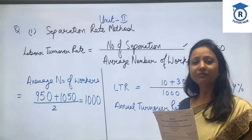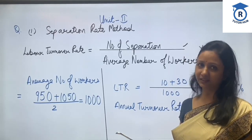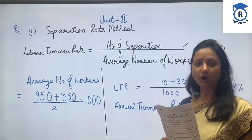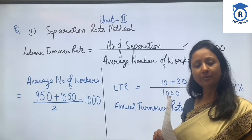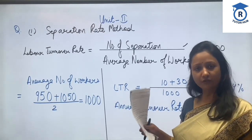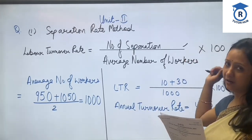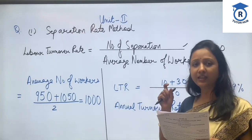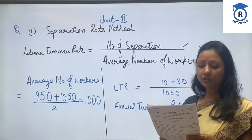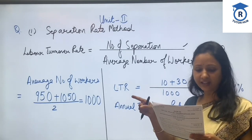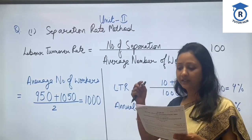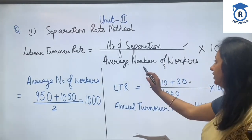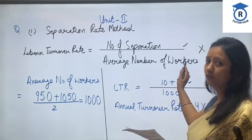In this question we will find out labor turnover rate by different methods. The first method is the Separation Rate Method, whose formula is: Labor Turnover Rate = Number of Separations divided by Average Number of Workers, multiplied by 100. Number of separations includes workers who left the factory plus workers discharged, that is 10 plus 30.